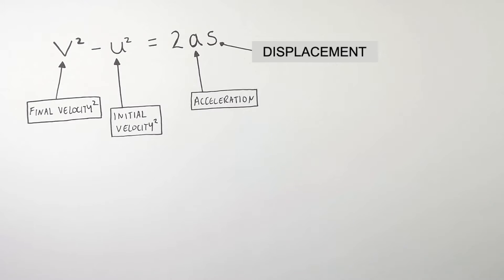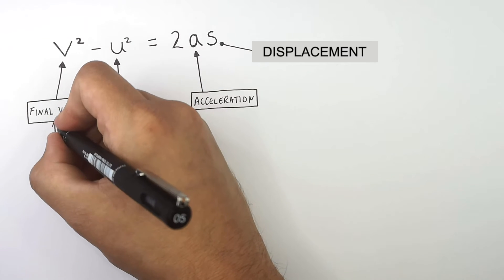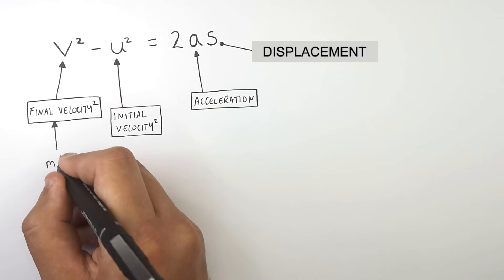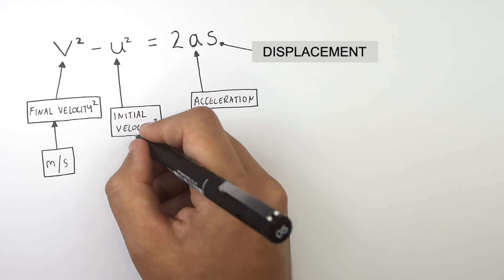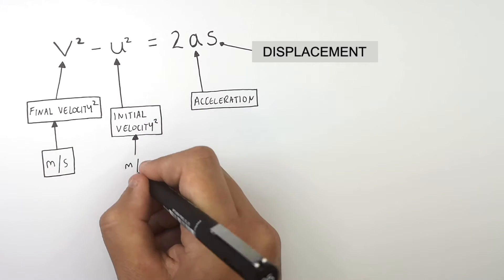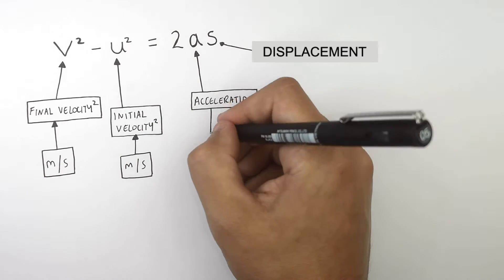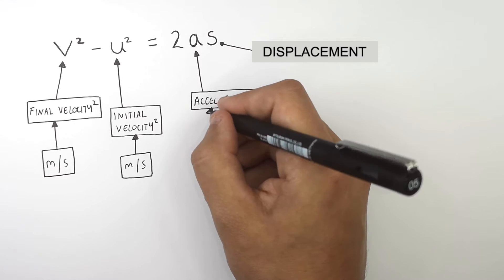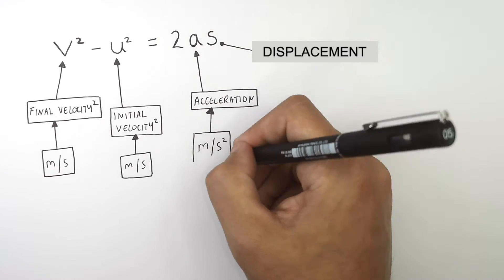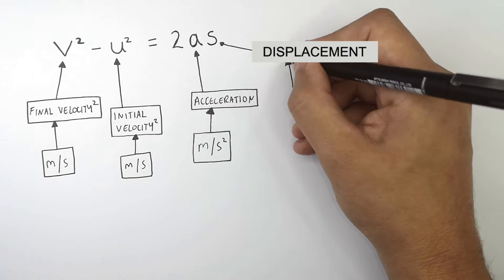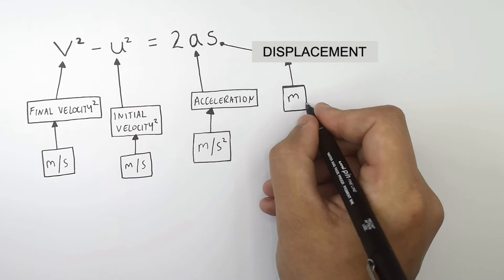So what are the units? Units for final velocity — well, it's a velocity, so it's meters per second. Initial velocity is also meters per second. Acceleration is meters per second squared. And the unit for displacement is meters.